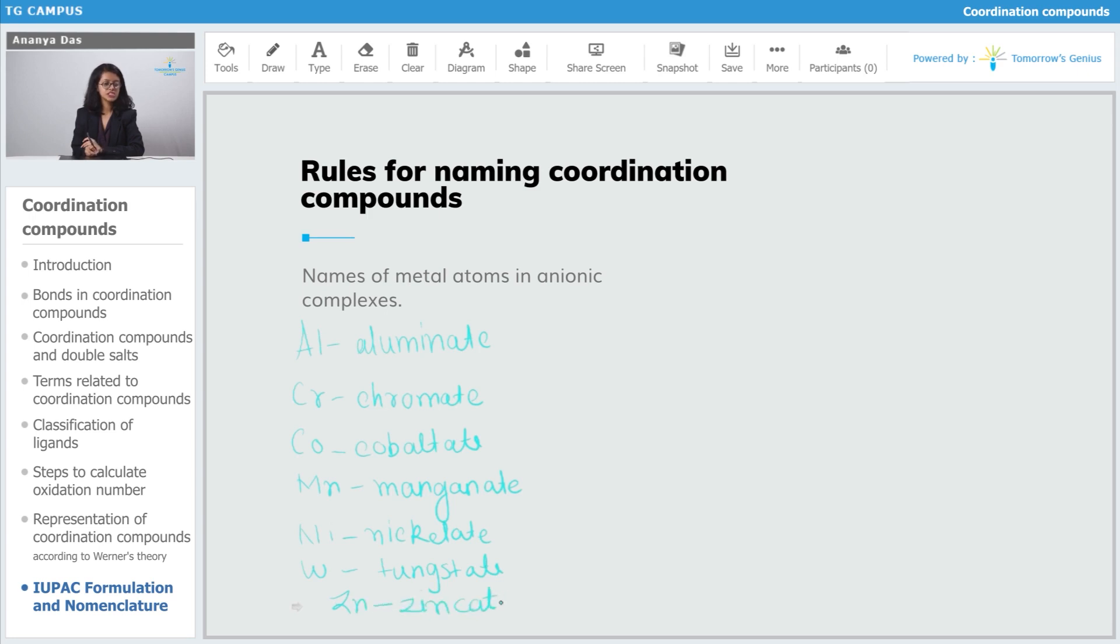In these metals, just -ate was added to the name. Now, there are some metals which are more commonly written according to the Latin name when present in anionic complexes like iron.